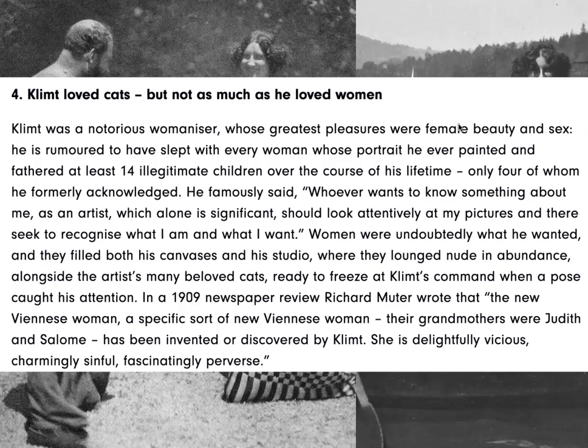There's a funny little quote: 'Klimt loved cats, but not as much as he loved women.' He had something like 14 illegitimate children over his life, and he only acknowledged four of them. He really didn't sort of respect women or appreciate them entirely, but at the same time painted women and made these gorgeous paintings of women. So there's an interesting dichotomy in who he is as an artist and what his art represents.